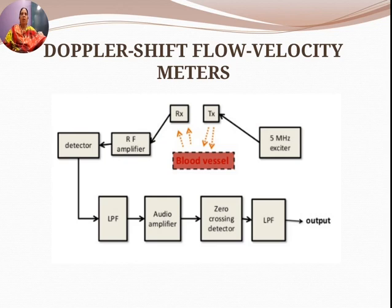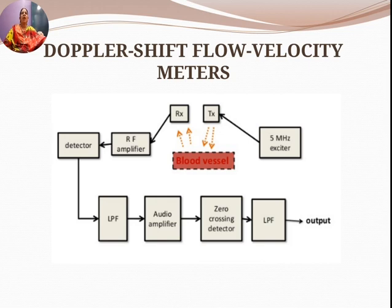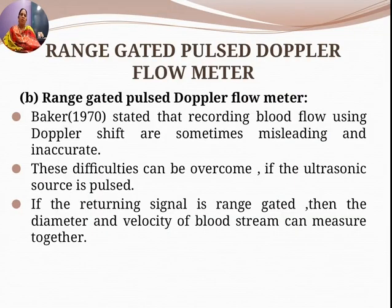In the block diagram of the Doppler shift flow velocity meter, ultrasonic sounds from the transmitter (TX) pass through the blood vessel and are received by the receiver (RX). The signal is amplified and detected, goes to a filtering circuit, and is further amplified using an audio amplifier before presenting the output through a low pass filter.